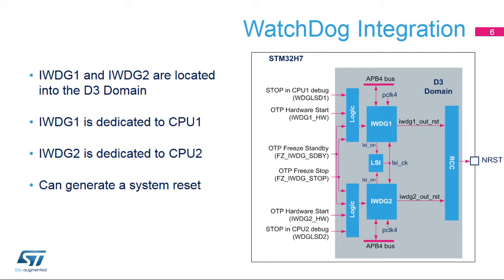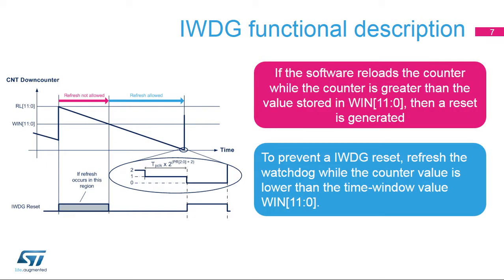Both watchdogs can perform a system reset handled by the RCC block. This diagram illustrates how the Independent Watchdog operates. When the downcounter reaches zero, the watchdog reset is activated. This happens when the application software did not refresh the watchdog on time. If the software refreshes the watchdog while the downcounter is greater than the value stored in the window register, then a reset is generated as well. To prevent a watchdog reset, the refresh must occur when the downcounter value is other than zero and lower than the time window value.